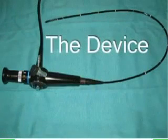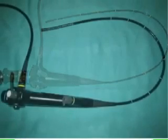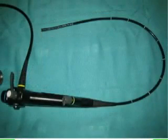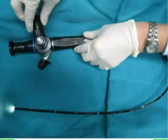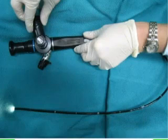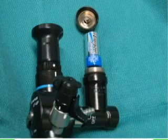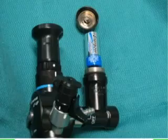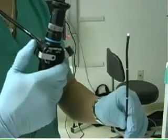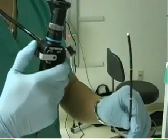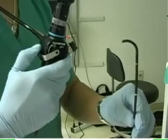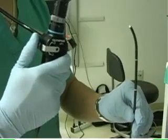Modern flexible bronchoscopes include fiber optic bronchoscopes, video bronchoscopes, and hybrid designs. Flexible fiber optic bronchoscopes are also available with battery operated light sources, which greatly improve portability. The handle of the bronchoscope is fitted with a lever which controls flexion and extension of the tip of the bronchoscope in a single plane.